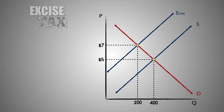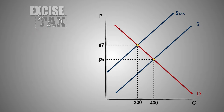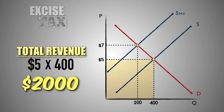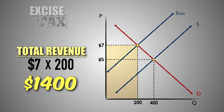From here, we can determine the tax incidence in the market using several steps. Step 1: We can determine the total revenue for firms in the market for Good C before and after the tax. Before the tax, firms in the market earned a total revenue of $2,000. However, after the tax was imposed, the total revenue for firms that produced Good C decreased to $1,400.